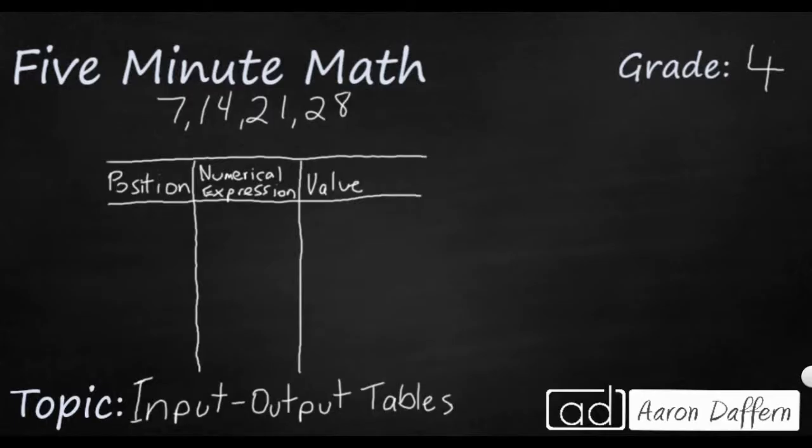So what they're wanting you to really see, and if we want to, we can use some of our old terms. This would be the input. This would be the output. And this numerical expression is really talking about the rule, what's happening to the input to make it into the output. So what we have is a list of numbers: 7, 14, 21, 28. So those are going to be my outputs. Those are the numbers that happen because of the rule. Something is done to them. So let's go ahead and put them in here.